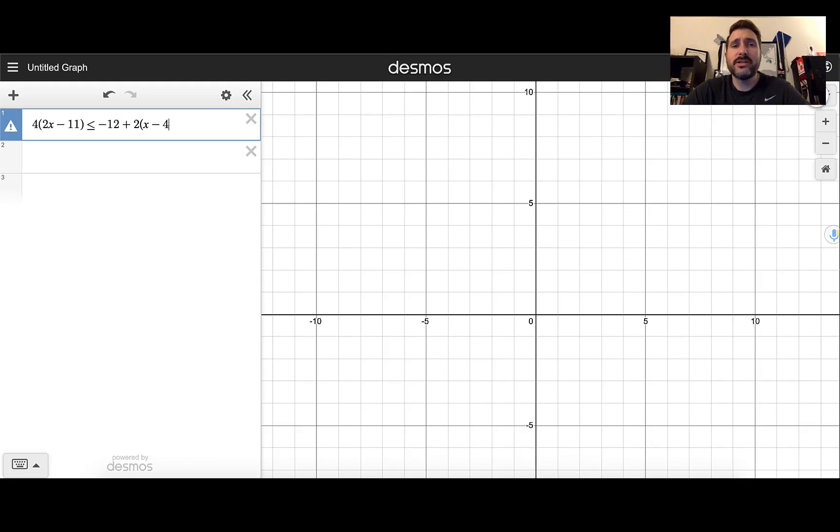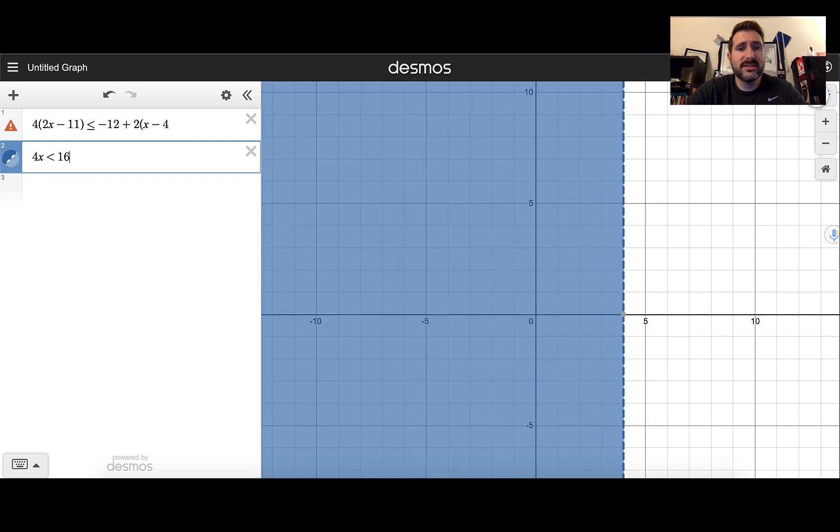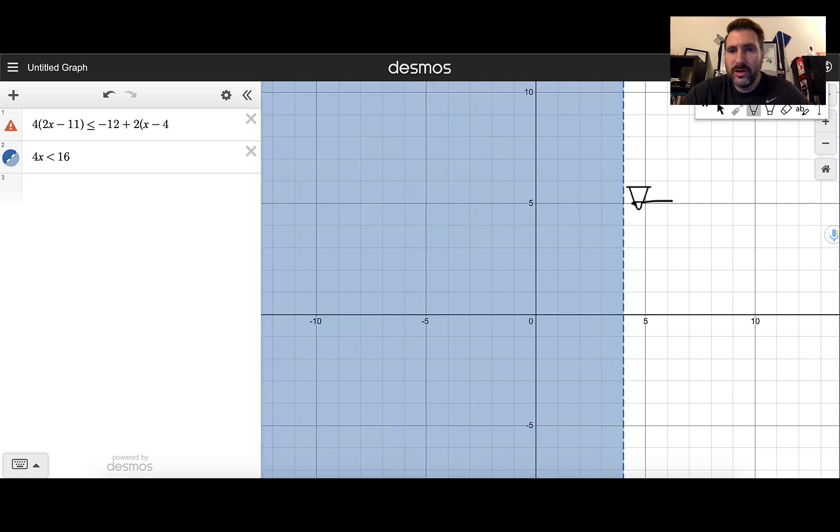When you're solving these inequalities, you also can actually just use Desmos to help you out. So whether it's a simple inequality like 4x ≤ 16, it can help you to determine the answer. So if you notice, when I typed in an inequality, it gave me a colored or shaded region. Notice the line is dashed. That's like an open circle, not colored in. I can see that from the symbol over here. If I switch it to greater than or equal to, now notice the line is no longer dashed. It's solid as if it's colored in.